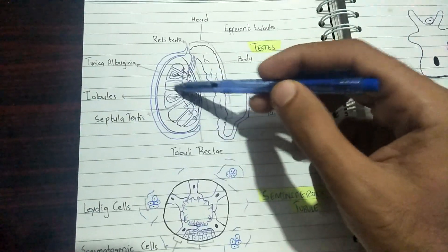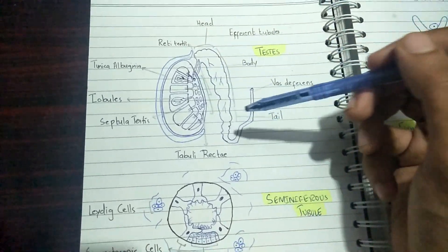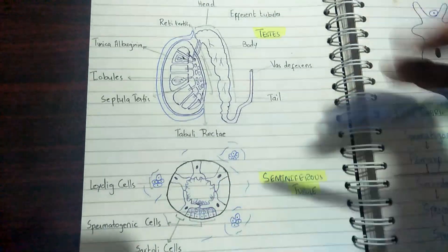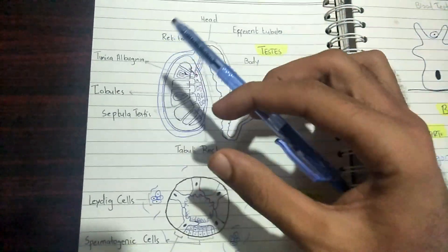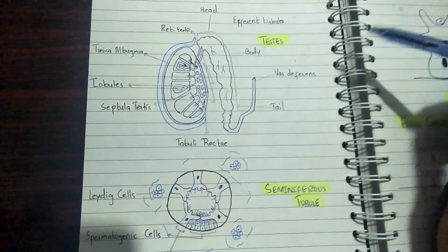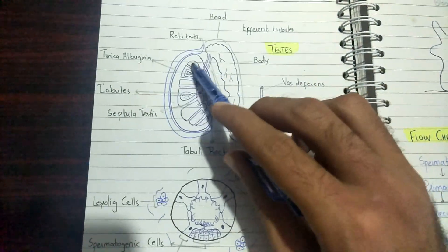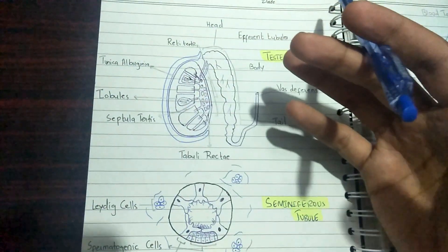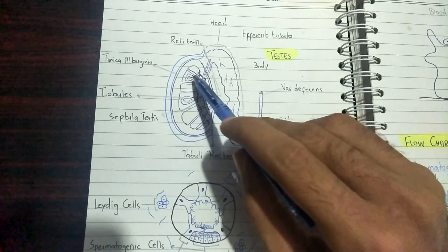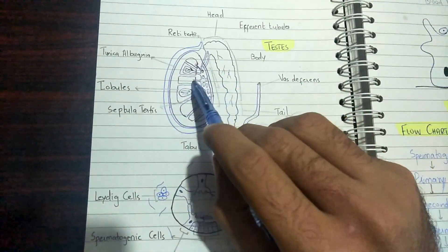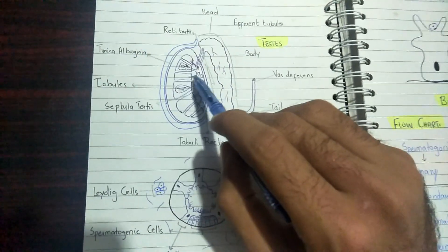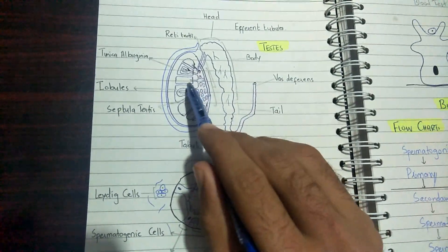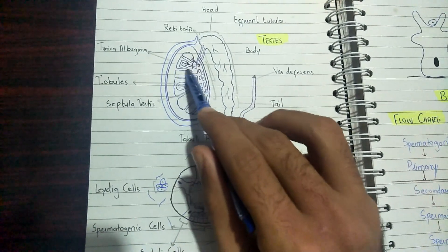Inside these lobules, there is a network of tubules known as seminiferous tubules. These seminiferous tubules are the functional unit of the whole testes. They are very convoluted structures, each connected to a network by a single tube known as a straight tubule.